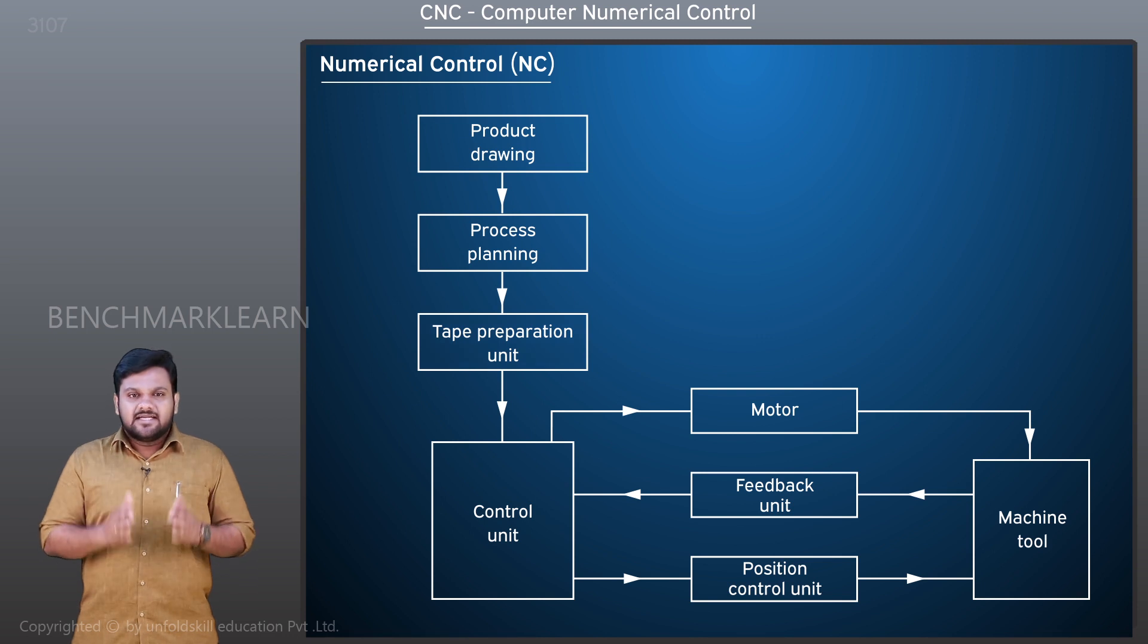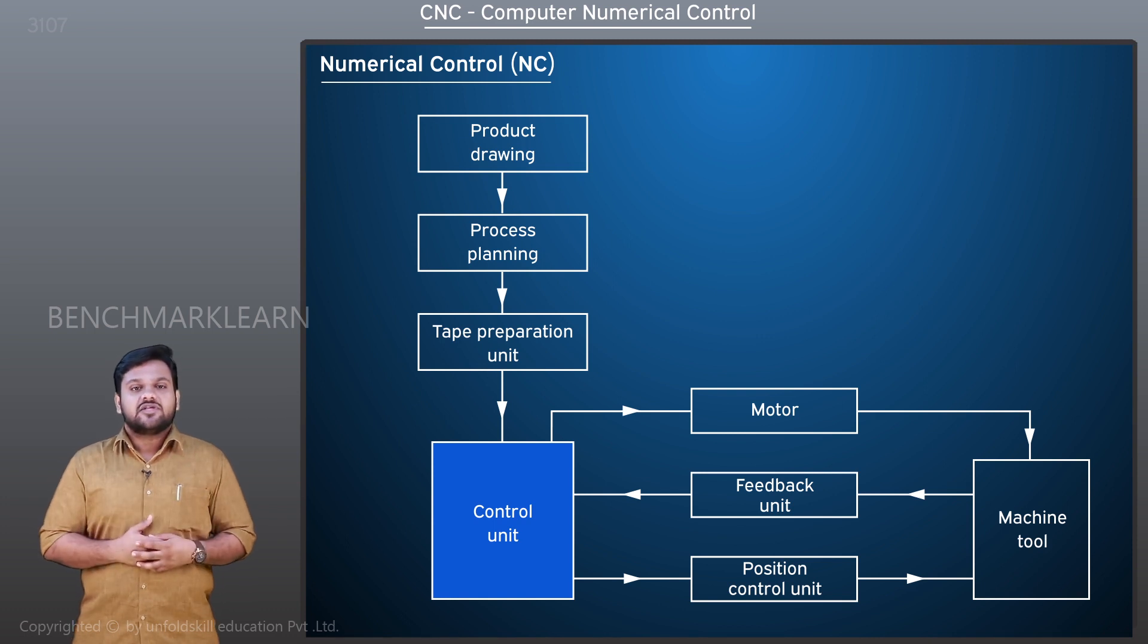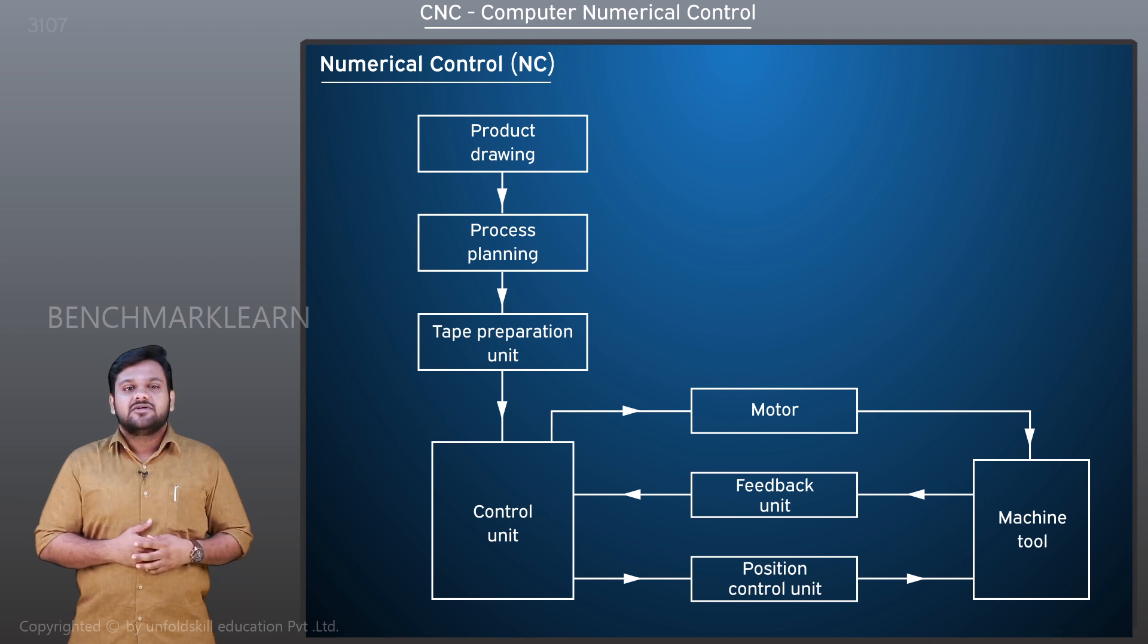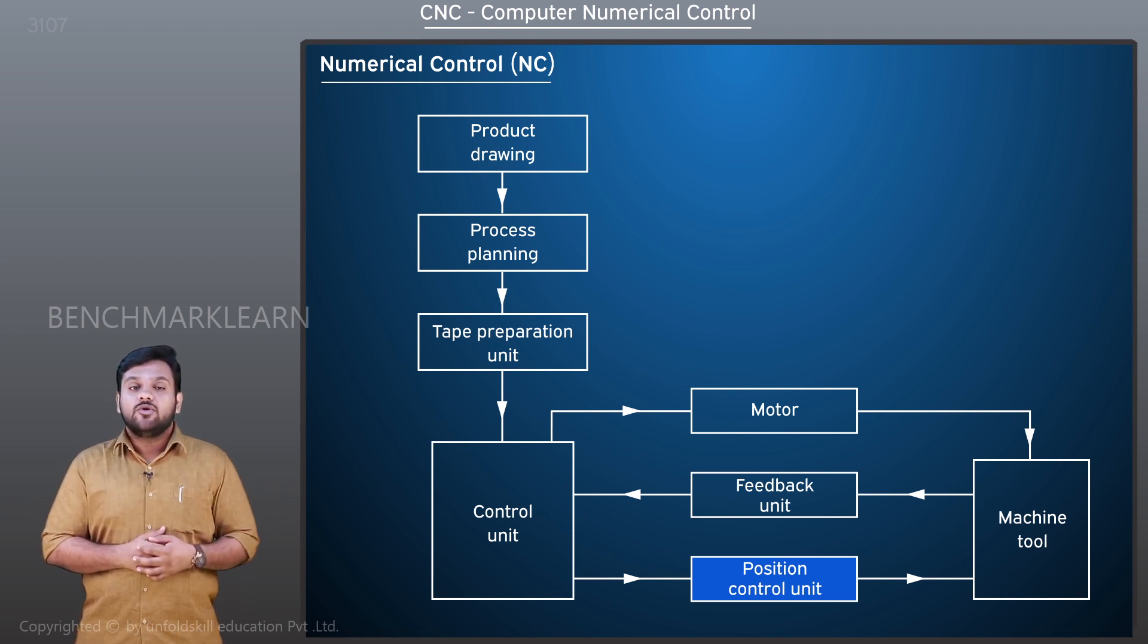The tape is fed to the control unit. The machine control unit reads the instructions line by line and sends these instructions to the position control unit. The position control unit controls the motion of the workpiece and tool in axes.